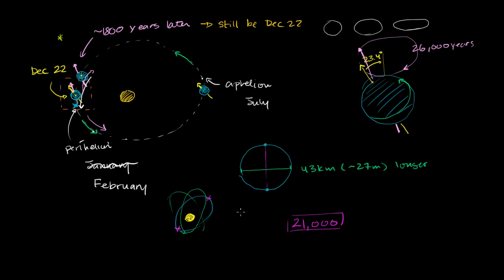And then on top of that, if that's not enough for you, not only is the direction of Earth's rotational axis changing, and the tilt is changing, and the perihelion and the aphelion are also rotating around, it's also the case that the eccentricity of the orbit itself is changing.